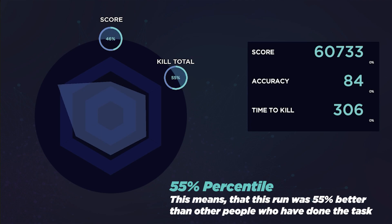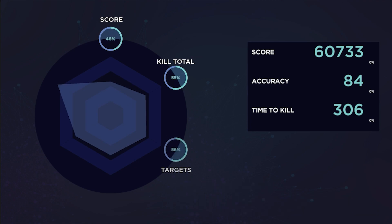Kill total is the total amount of targets destroyed during the round. Targets is the number of total targets that have spawned during the round. Time to kill is how quickly you reacted between targets, measured in milliseconds. Kills per second is how many targets you eliminated during a one-second period. And finally, we have accuracy, which is the overall percentage of hit shots.